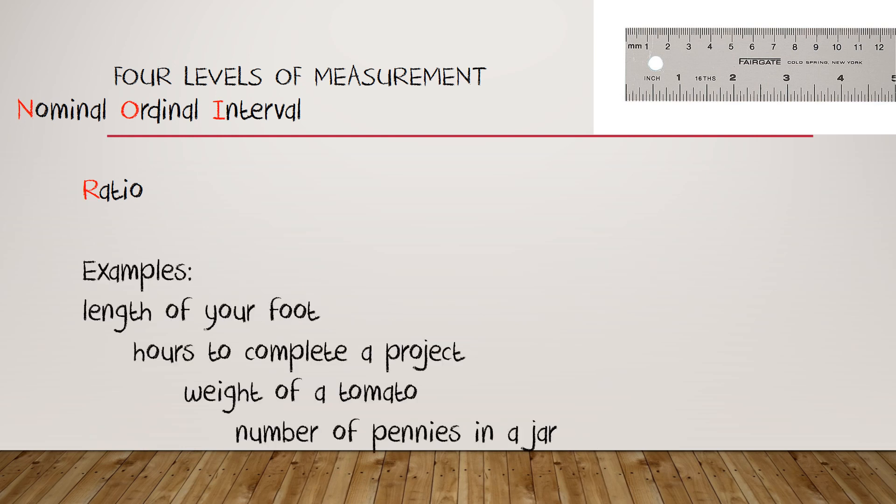Here are some examples of ratio data: the length of your foot as opposed to your shoe size - zero inches would mean a specific value. Six inches is twice as long as three inches. A baby's foot, for example. Hours to complete a project, the weight of a tomato, or the number of pennies in a jar. Notice that some of these are counting variables - one, two, three, four, like pennies in a jar - while others are continuous variables. It might take you 3.76 hours to complete a project. That doesn't matter in terms of deciding whether or not data is ratio or not.